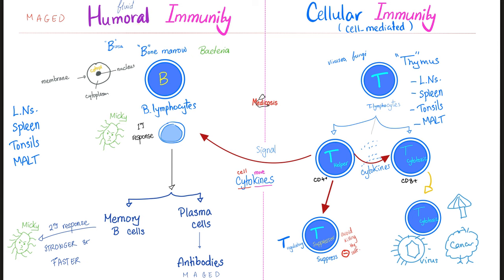Why do we call this humoral immunity? Because we're secreting antibodies into the humors — the fluids of the body, such as the serum or your mucous membrane fluid. Why do we call this cell-mediated? Because the cell, by itself, goes and kills the virus face-to-face, cell-to-cell. That's why it is cell-mediated.